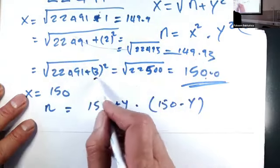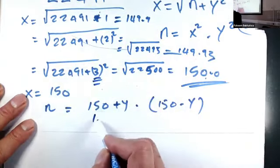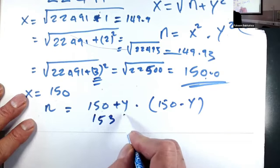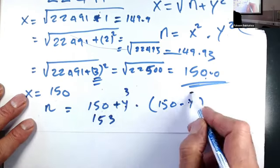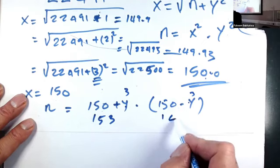Did we work it out? So that's what y is. So it's either 153, because y equals three here, or 147.